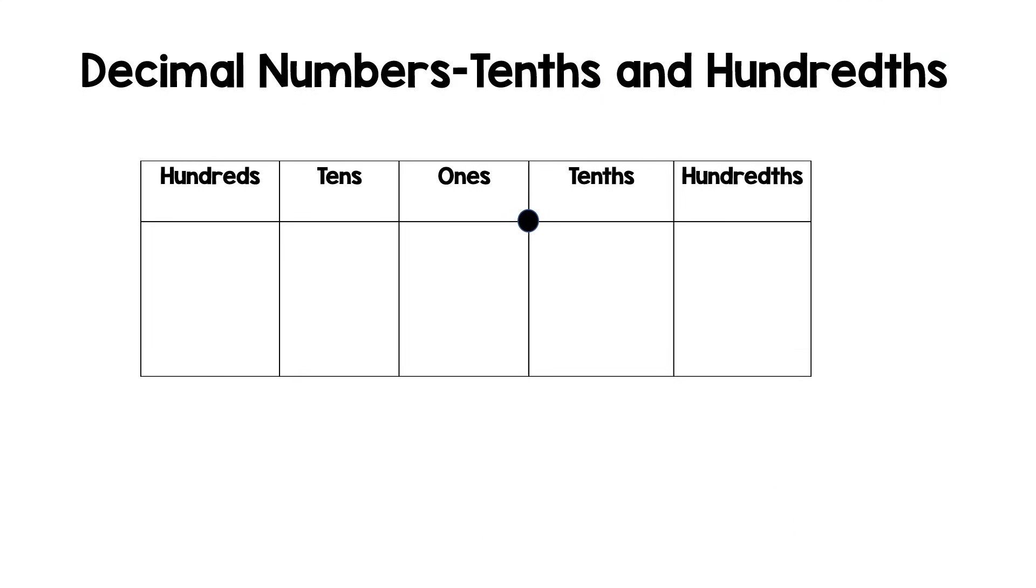So now the place value that we're going to be using as we discuss tenths and hundredths is here. This is the tenths place. This is the hundredths place, and here separating the ones place and the tenths place is our decimal. We don't call it a dot or a point. It is a decimal.